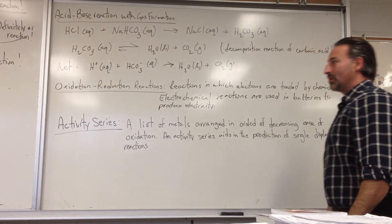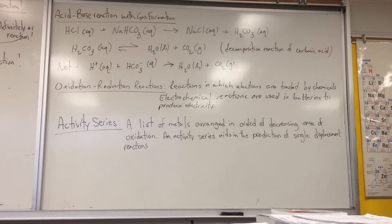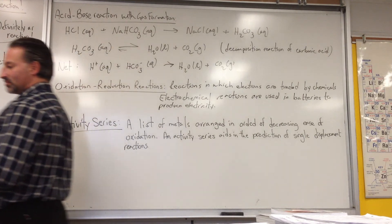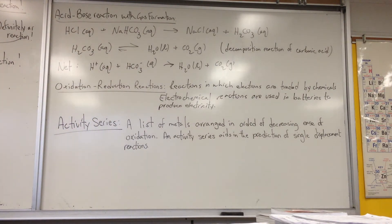Another type of reaction you should know about is the oxidation-reduction reaction. And these are reactions in which electrons are traded by elements or chemicals. Electrochemical reactions are used in batteries to produce electricity. They also can be a form of scourge for automotive manufacturers because if you combine certain types of metals, they make very poor combinations. They lead to very rapid corrosion.